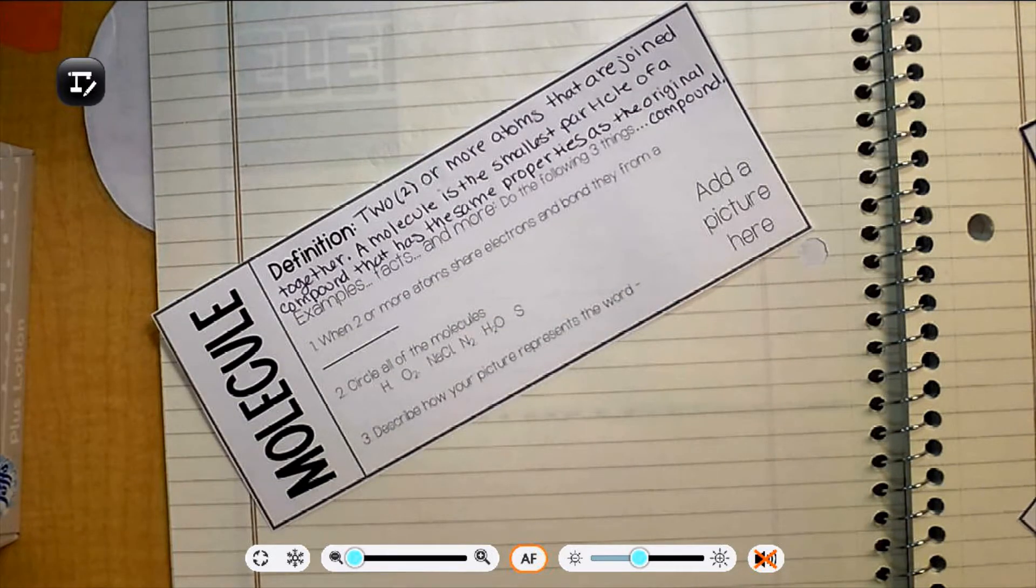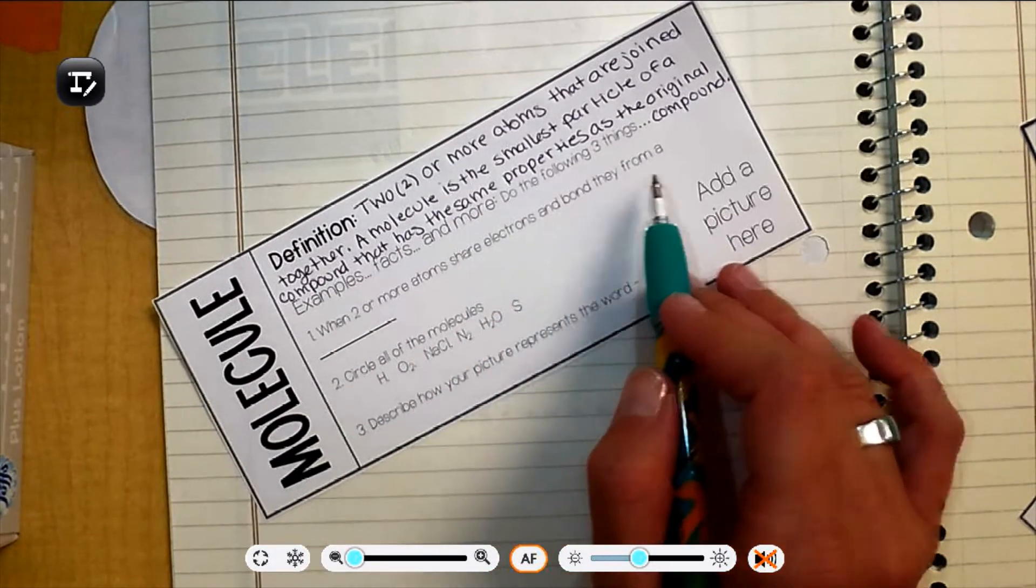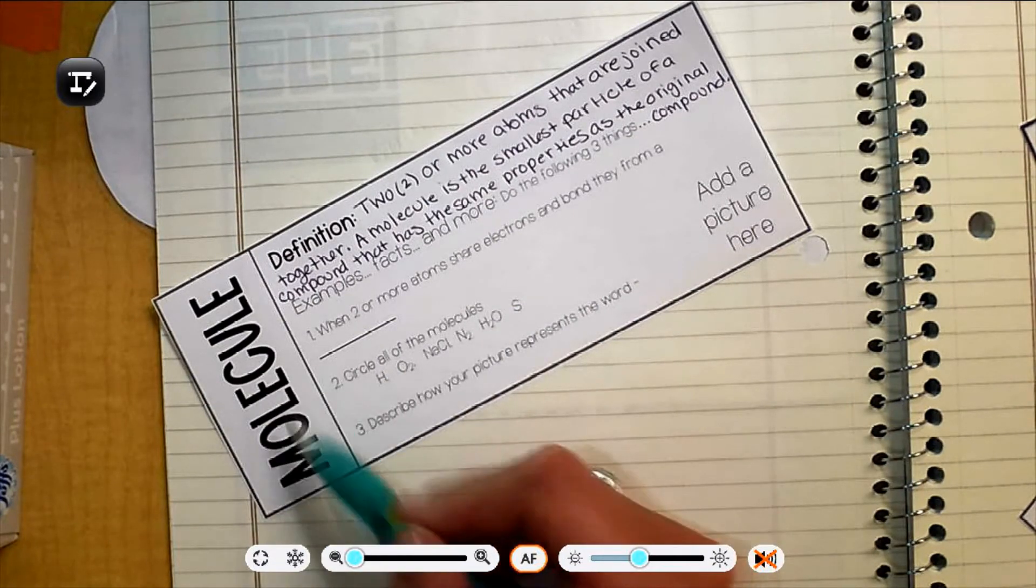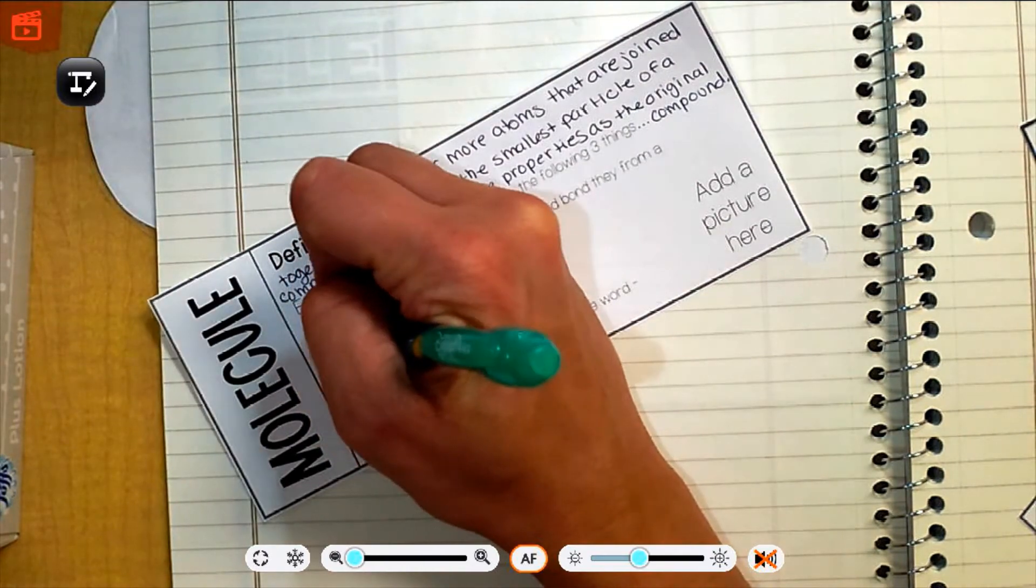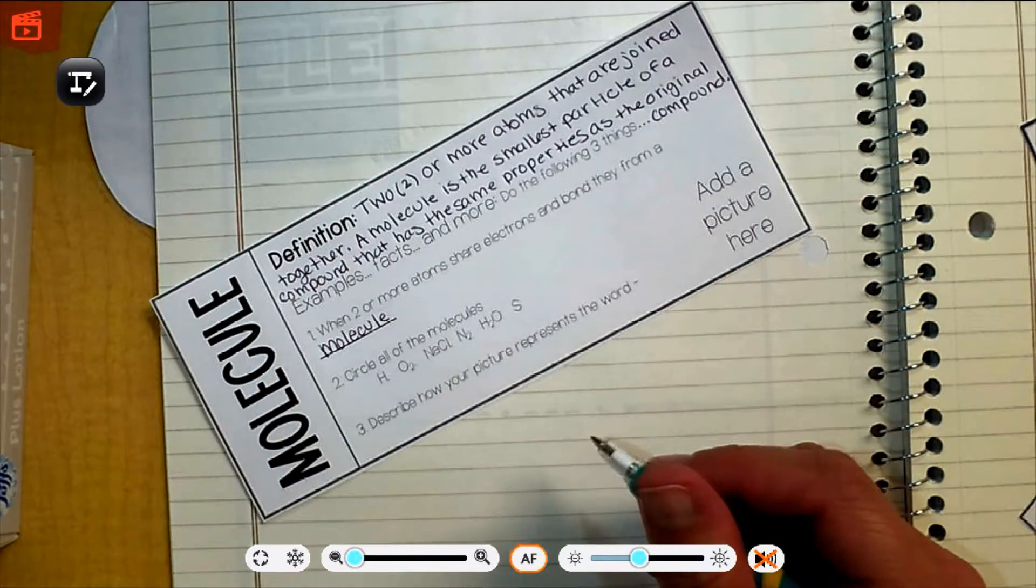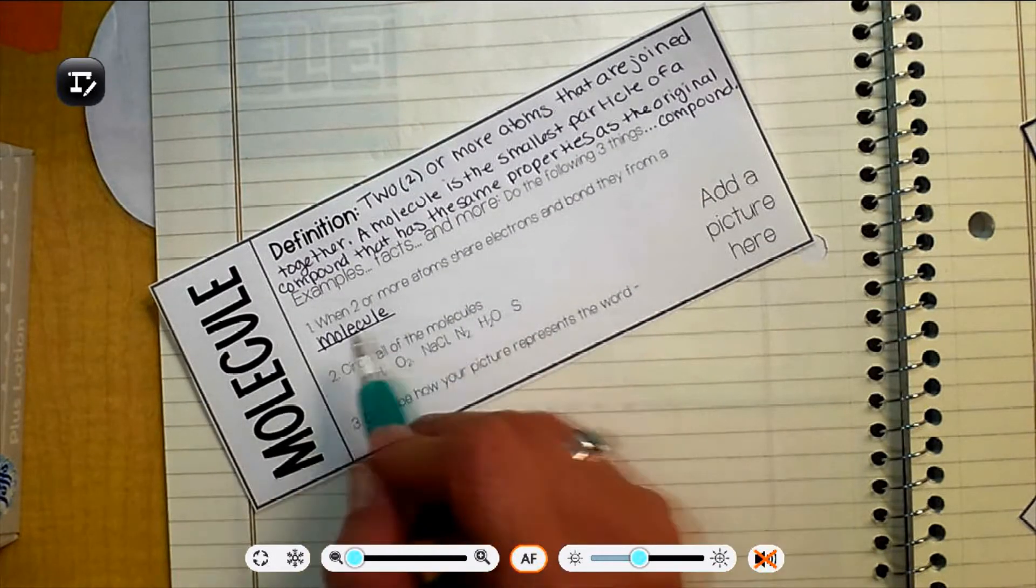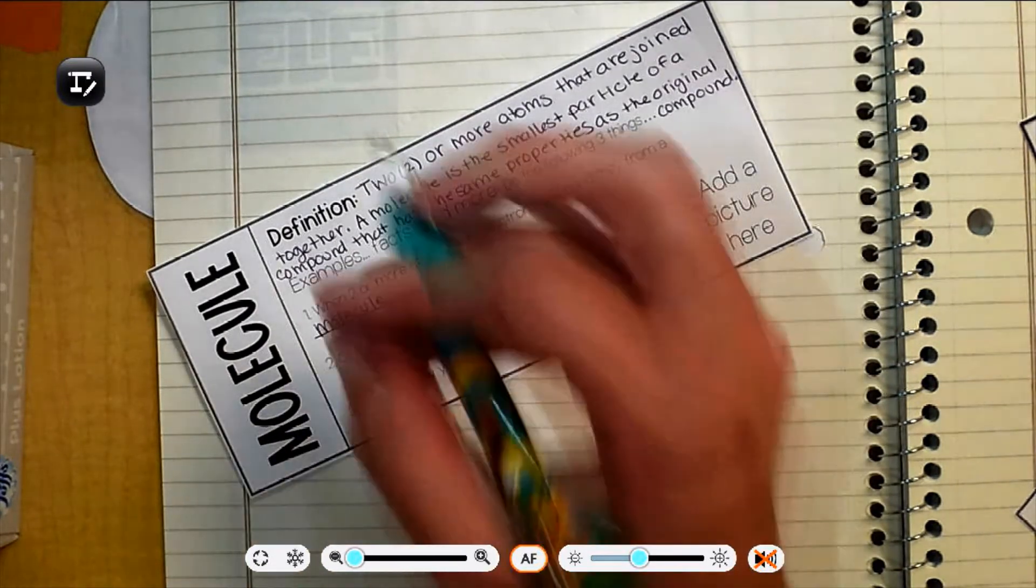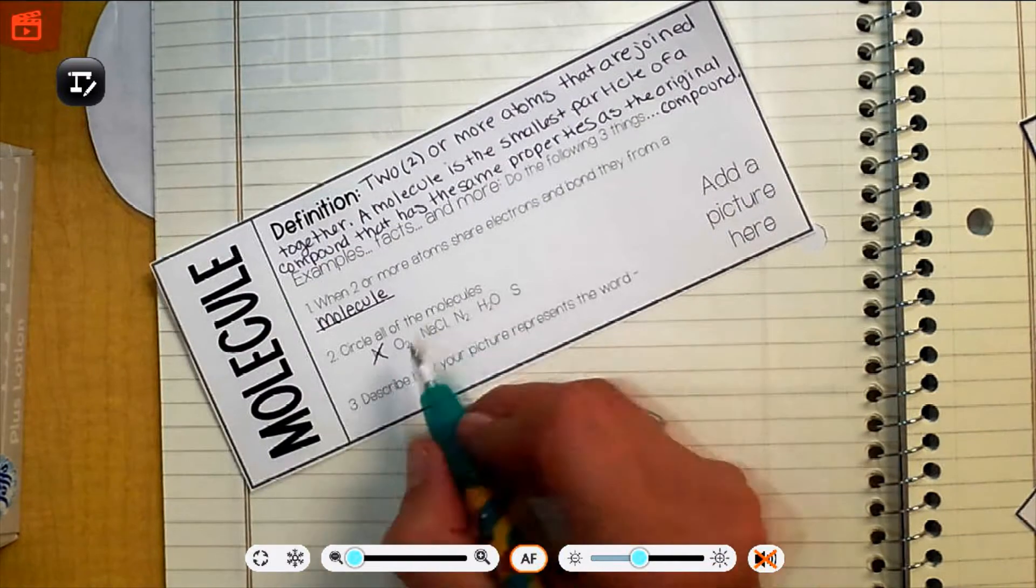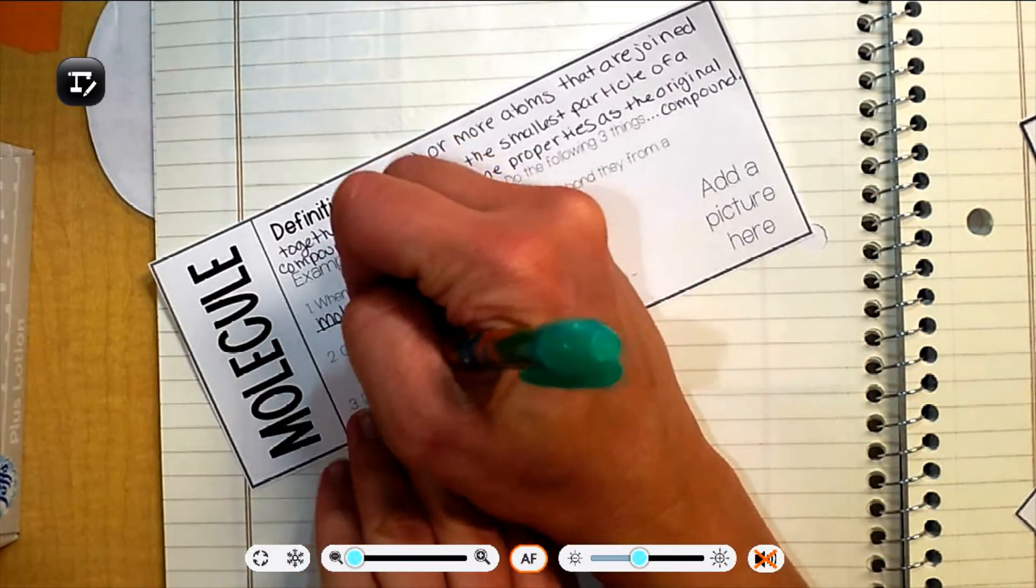So our first question says, When two or more atoms share electrons and bond, they form a... What's the word? Molecule. Okay, now we're here, we're circling all of the molecules. So it has to be two or more atoms. H with no number. Is that two or more? No. I'll cross it out. O2. That means two atoms of oxygen. Yes, that is a molecule.